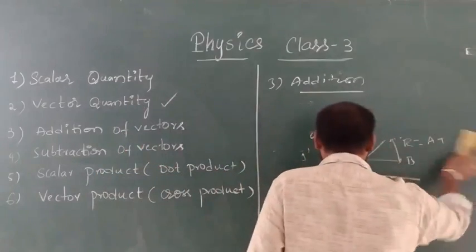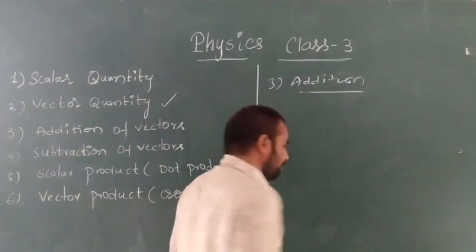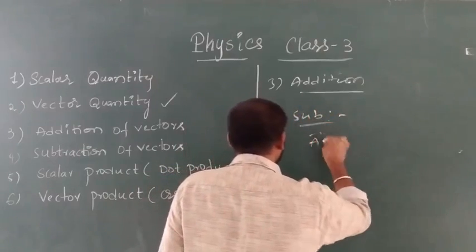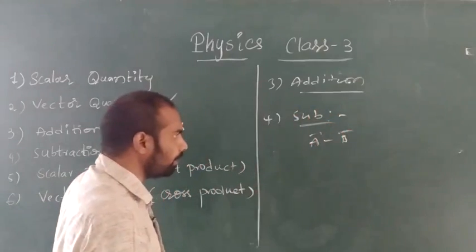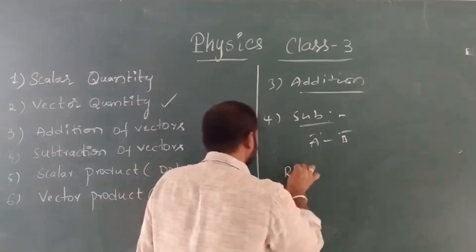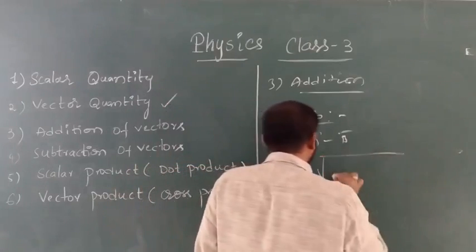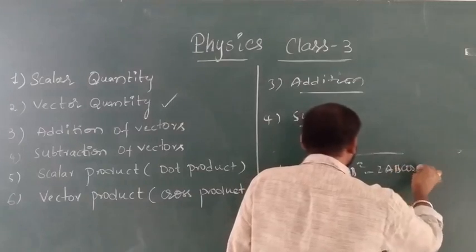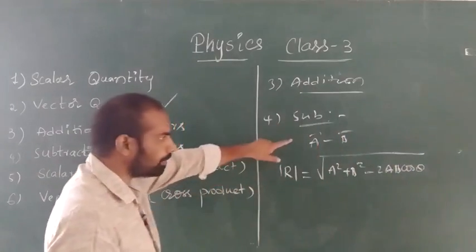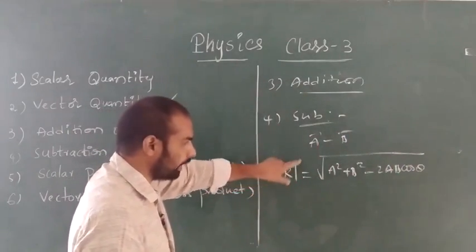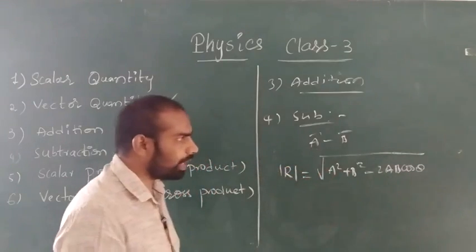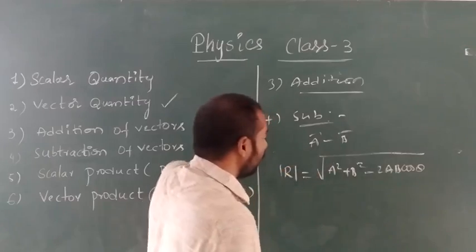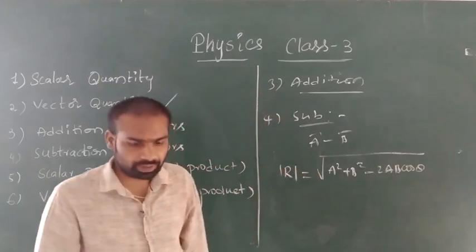Next we have subtraction of vectors. Simply A-bar minus B-bar. The resultant magnitude of two vectors for subtraction is given by the square root of A² plus B² minus 2AB cos θ. You should remember this — for subtraction of vectors, the resultant magnitude is the square root of A² plus B² minus 2AB cos θ.